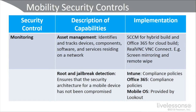There's also root and jailbreak detection. Jailbreaking is where iPhone users break their device to remove software restrictions placed by Apple, install a custom kernel to gain root access, and download apps not available in the App Store. Root and jailbreak detection applies to both iOS and Android devices, ensuring the security architecture hasn't been compromised. This can be implemented through the mobile OS, for example using Lookout, or through Intune compliance policies.